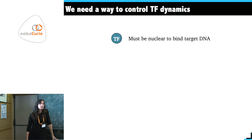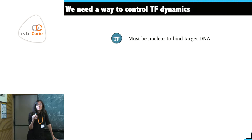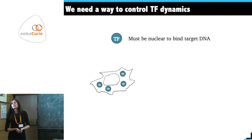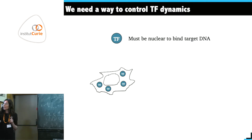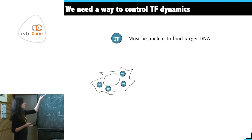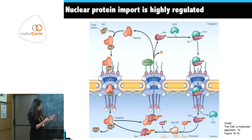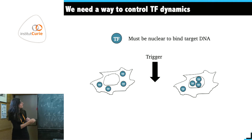As synthetic biologists we want an experimental setup that allows us to control the system externally — to control the transcription factor and thus its dynamics. What we would like is a scenario where the transcription factor is in the cytoplasm, the inactive state away from its target, then a trigger comes and the transcription factor moves into the nucleus to start activating transcription.